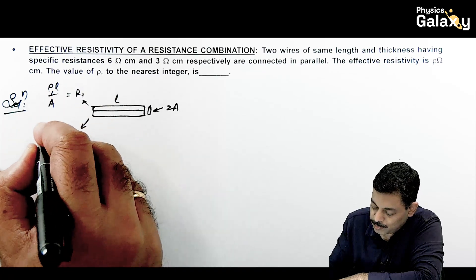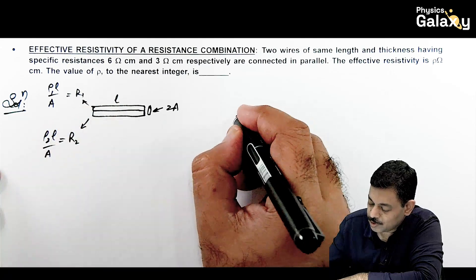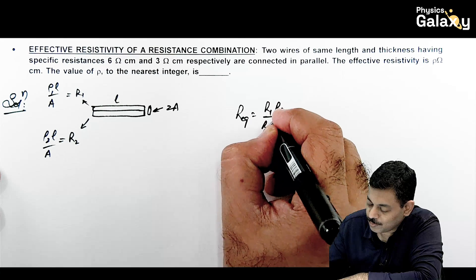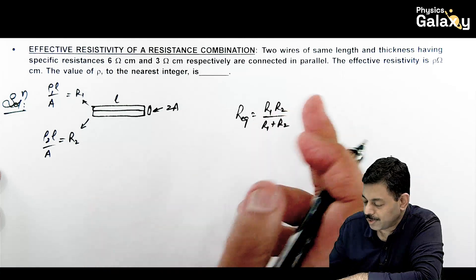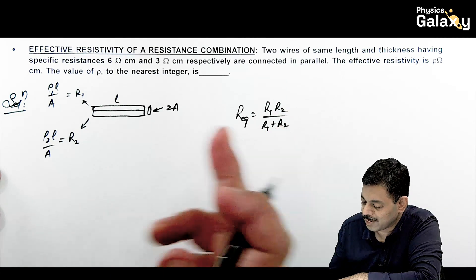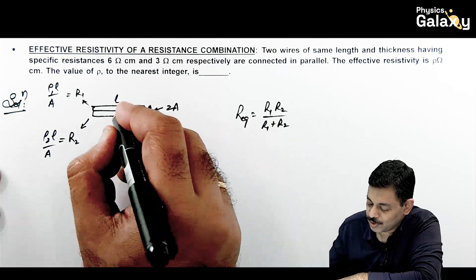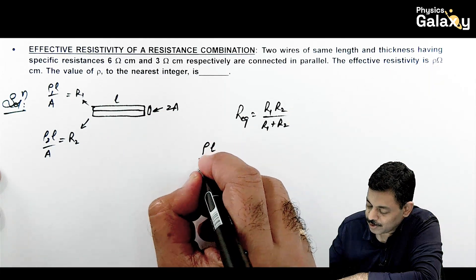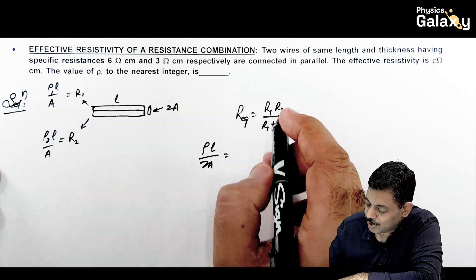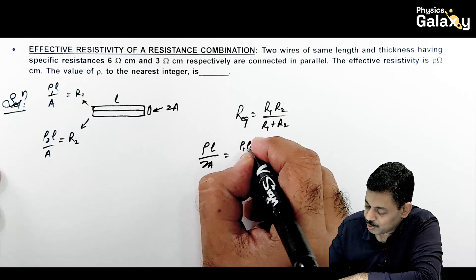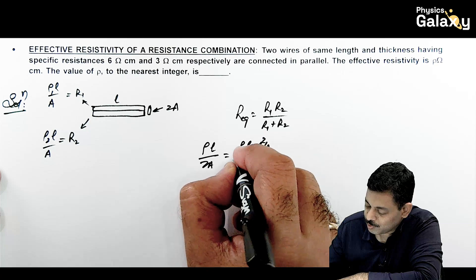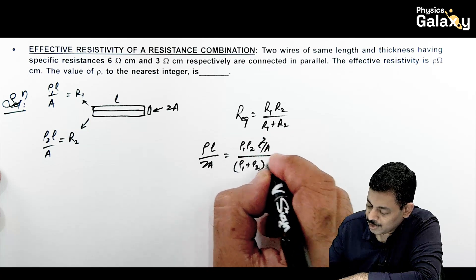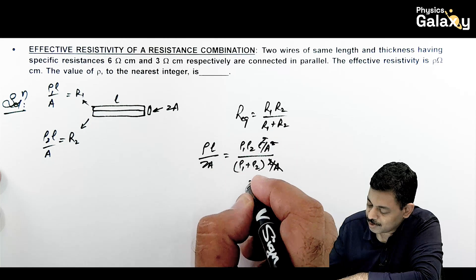So R_equivalent = R1·R2 / (R1 + R2). We can also write R_equivalent as the effective resistivity ρ multiplied by length L divided by 2A. This equals ρ₁ρ₂L²/A² divided by (ρ₁ + ρ₂)·L/A. The L/A terms cancel out.